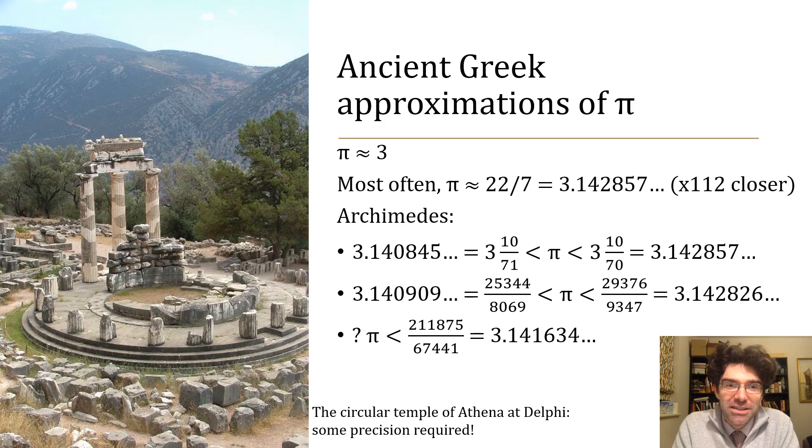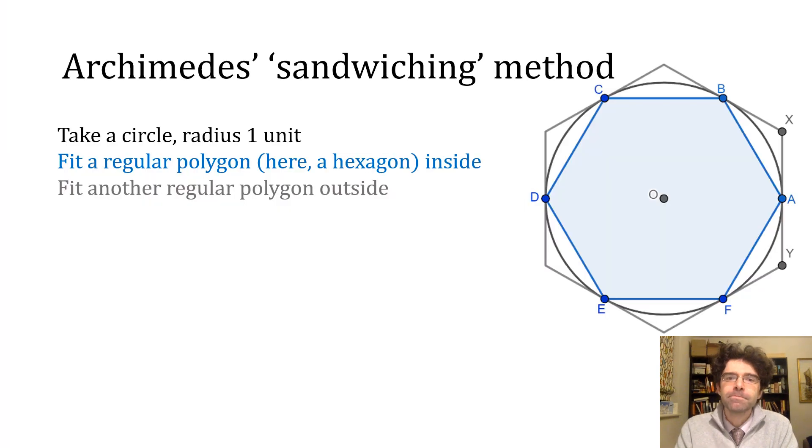The method involves taking a circle and throughout the talk we're going to assume that the radius of the circle is one unit, and you fit a regular polygon inside it, which we're going to put in blue, and you fit another one outside it which we're going to put in grey. In the example on this slide I've used hexagons.